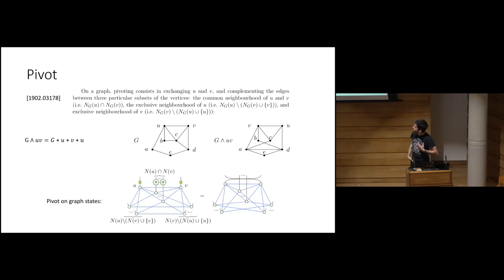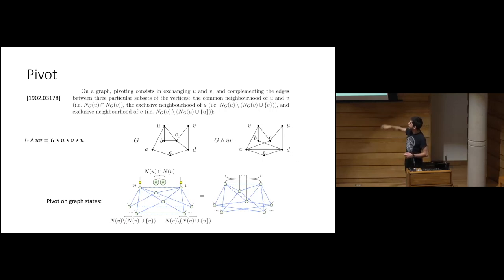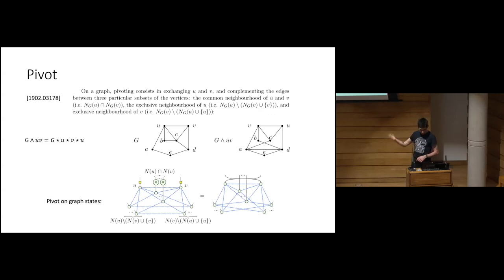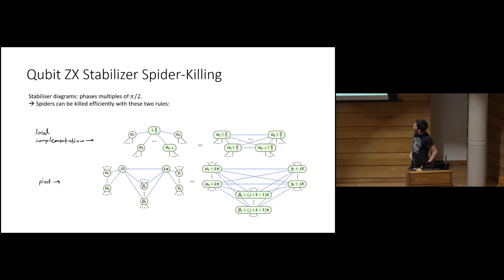The second operation is a pivot about an edge, which is a composition of three local complementations — about u, then v, then u again. For a graph state this means you swap the two vertices, stick Hadamards on them, and apply a complete graph between three sets of neighbours: the shared neighbourhood, the exclusive neighbourhood of one vertex, and the exclusive neighbourhood of the other vertex.